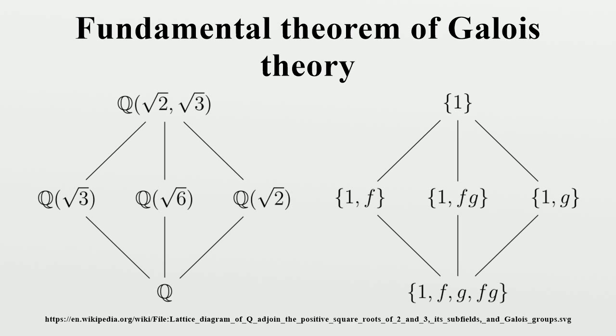The correspondence has the following useful properties. It is inclusion reversing. The inclusion of subgroups H1⊆H2 holds if and only if the inclusion of fields E^H1⊆E^H2 holds. Degrees of extensions are related to orders of groups, in a manner consistent with the inclusion reversing property.